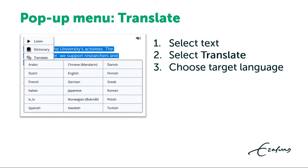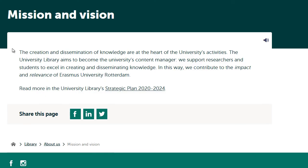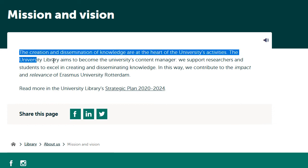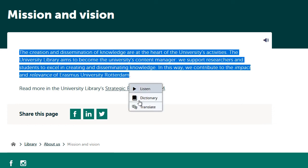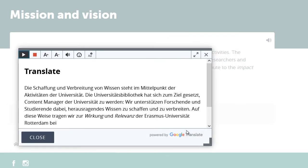For spoken translations, first select the text you want to translate, then click Translate in the pop-up menu. Next, select one of the 18 target languages. A window with the translated text will appear. Click the play button in the pop-up player window to have the text read aloud and highlighted. For example: I want to translate this to German. I press play to listen to the translation.